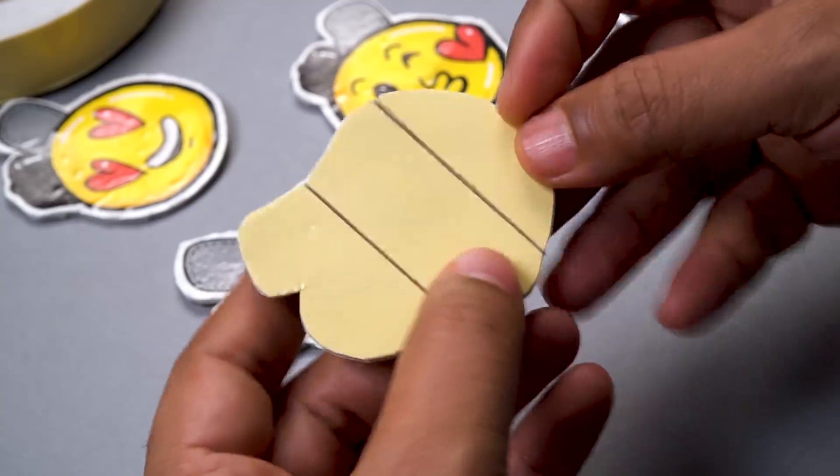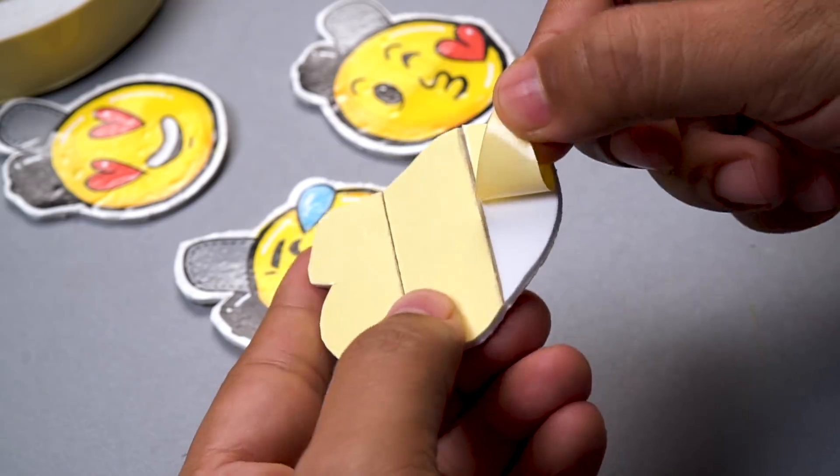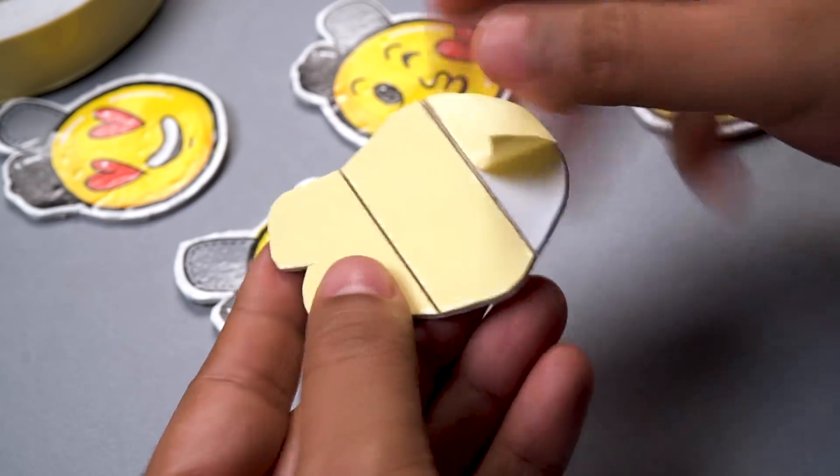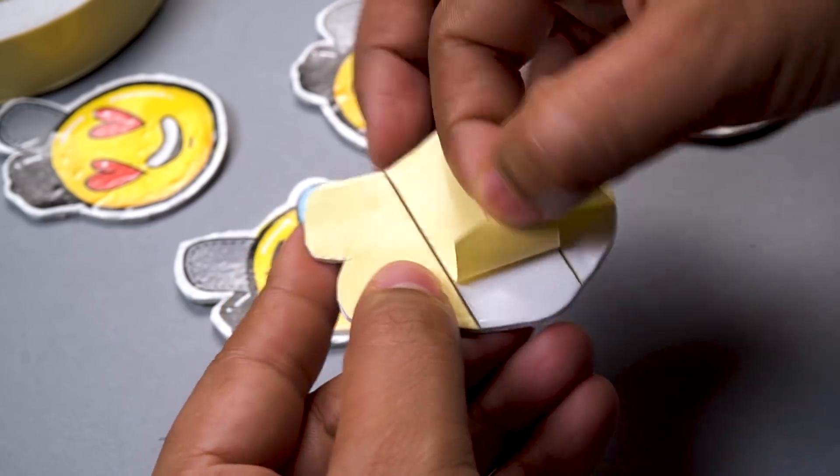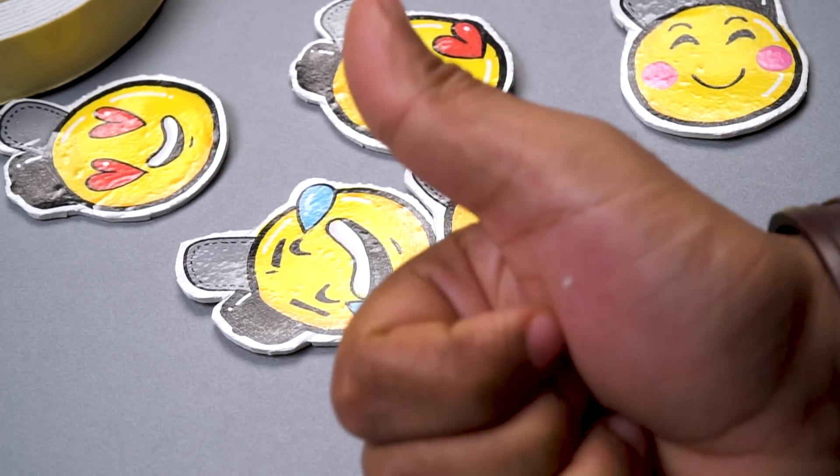And look at that, with that our emoji stickers are ready. I am super happy with them. Looks really nice. And they have a nice sticky back with the double sided tape. You can easily peel the tape off like this and stick it wherever you like. So there you go, enjoy.